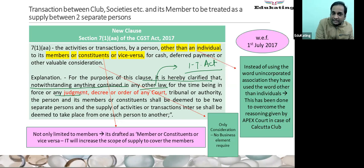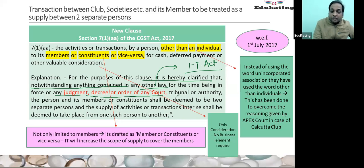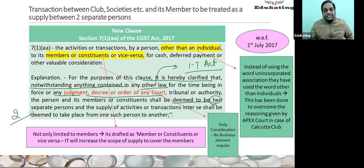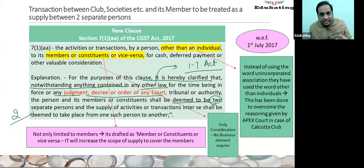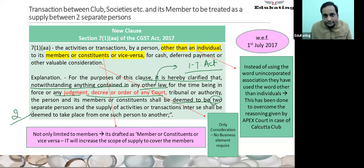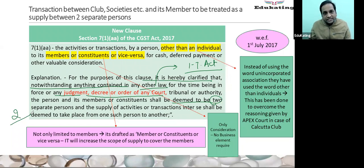They are referring to the Calcutta Club judgment. The club and its members shall be deemed to be two separate persons, and the supply shall be deemed to have taken place from one person to another person. The law's intention is very clear: they want to tax the transaction between club and member in GST with retrospective effect. This does not give clarity — rather, this will create too much litigation. This deeming fiction can make the transaction taxable in GST, yet to wait.